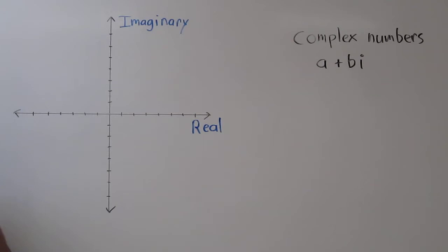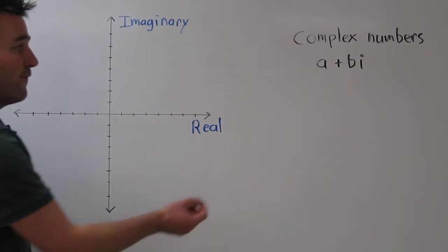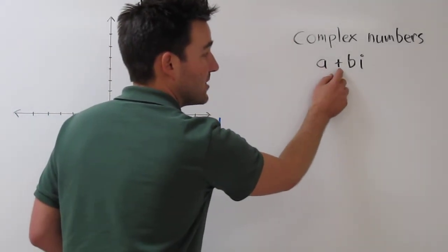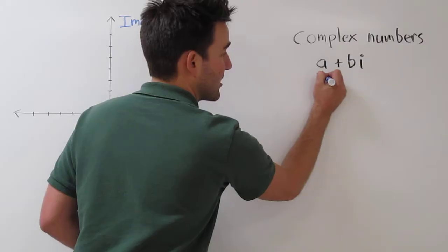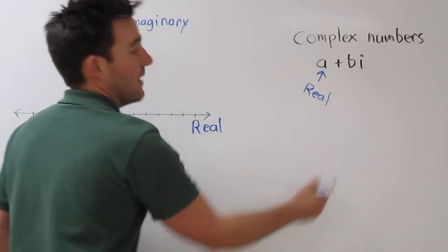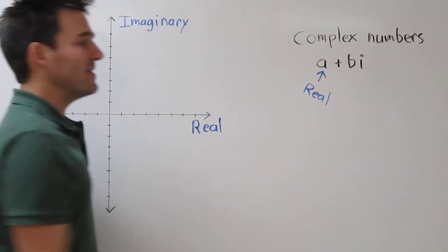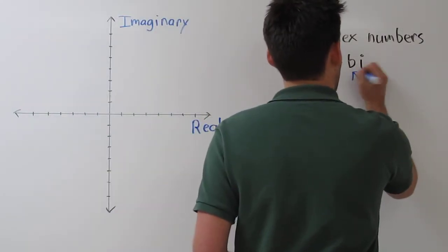Now, when we encounter complex numbers, they're usually written in standard form. That is, a plus bi. And we call a the real part of the complex number, and we call the coefficient b the imaginary part of the complex number.